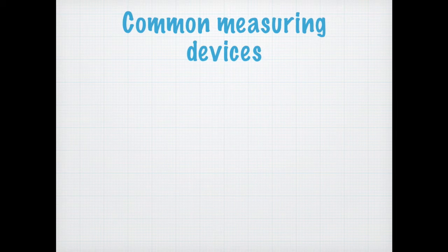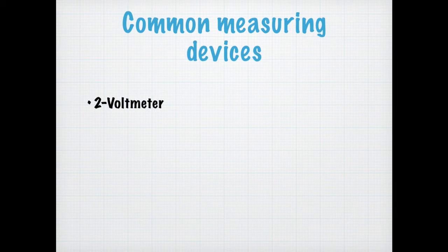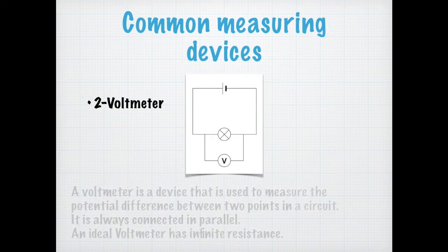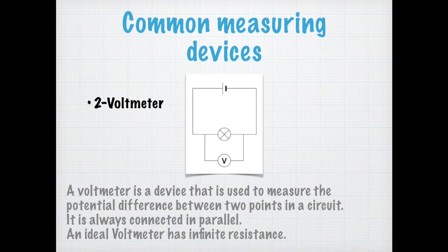Now let's move on to voltmeters. A voltmeter, as you can get from the name, is used to measure the voltage or potential difference across two ends of a conductor. A voltmeter is always connected in parallel. Do you remember that potential difference remains the same across parallel branches?